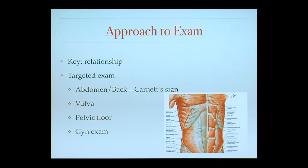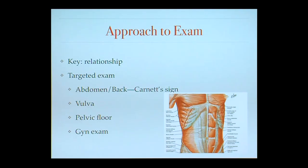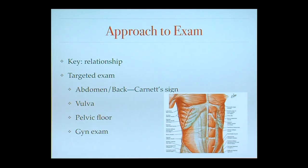A key to the exam for pelvic pain is good communication with the patient and knowing their history and previous exam experiences. We start with an abdominal exam, including the Carnett's sign: while palpating, have the patient flex or do a small sit-up. If the pain increases with the sit-up, that's a positive Carnett's sign suggesting the pain is associated with the abdominal muscles. If the pain decreases, it may be splinting — protecting internal organs — suggesting an internal organ cause.